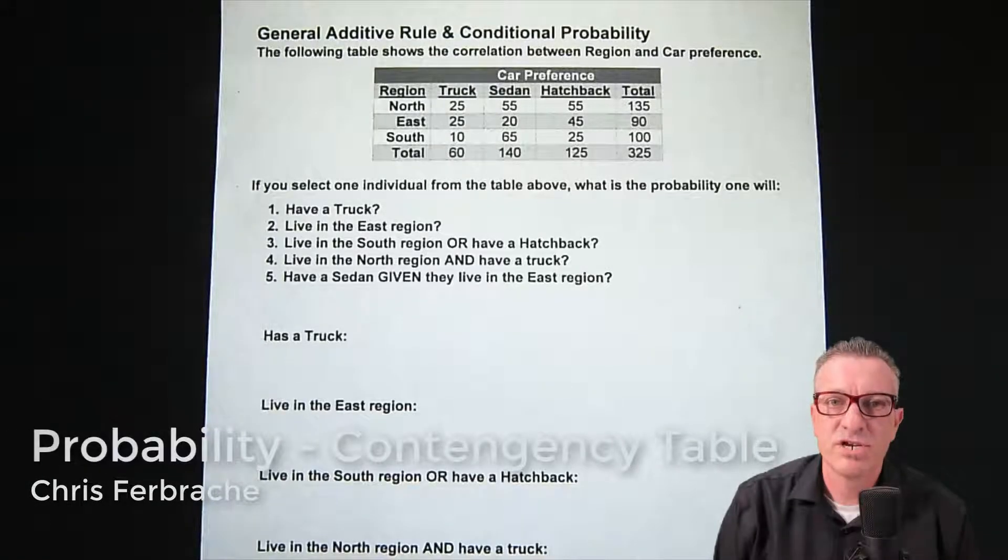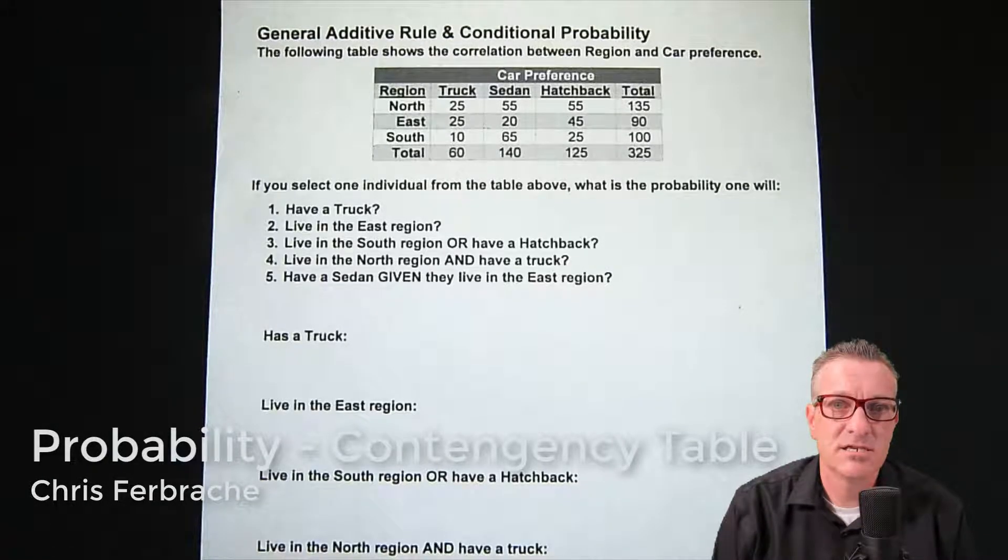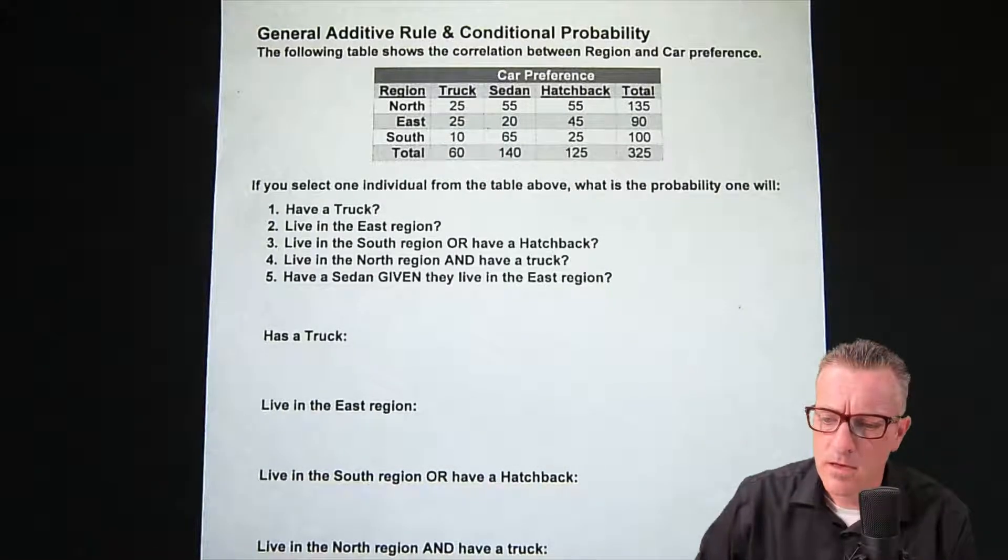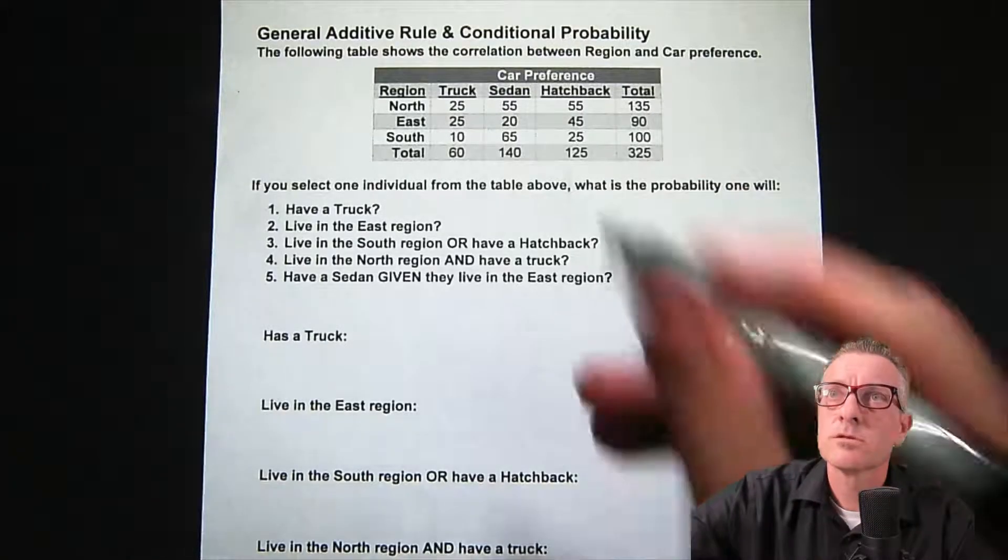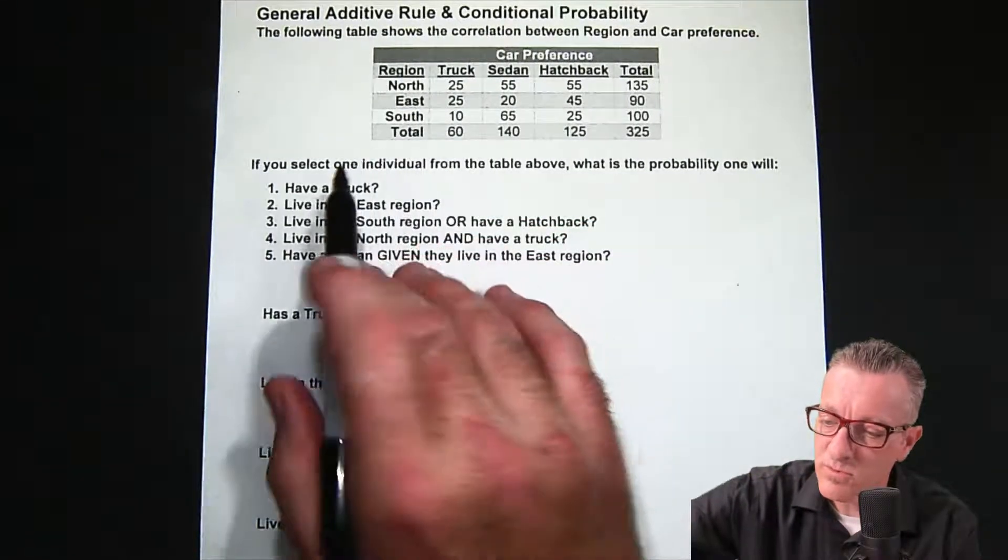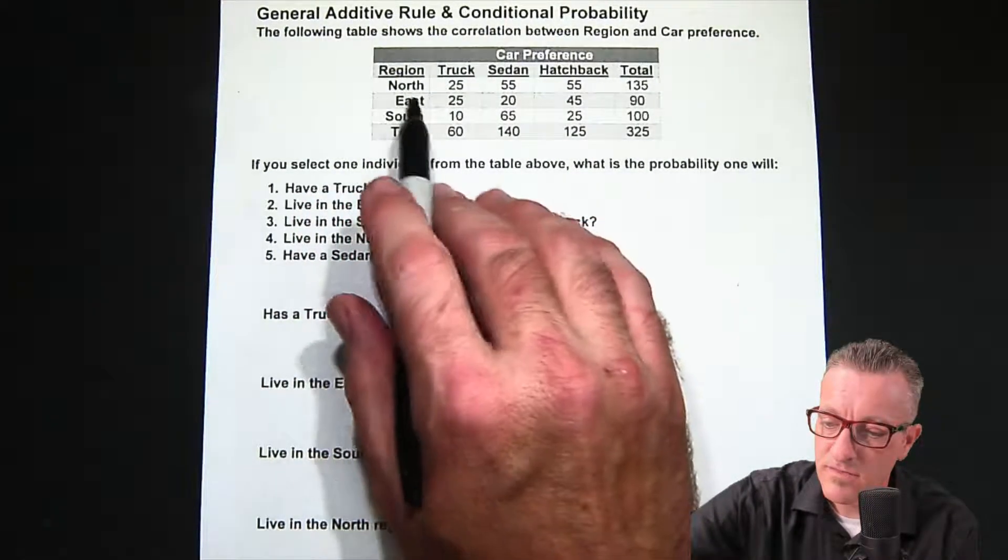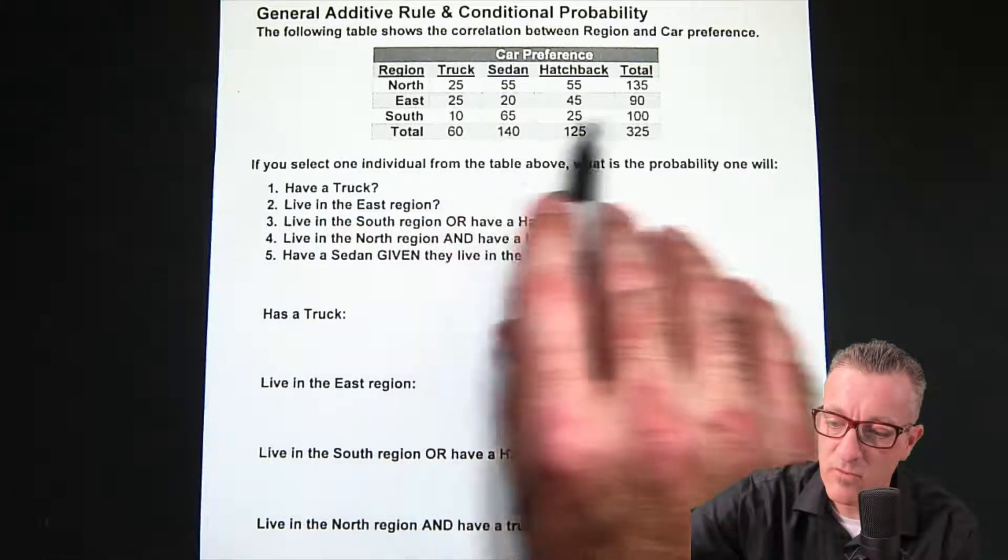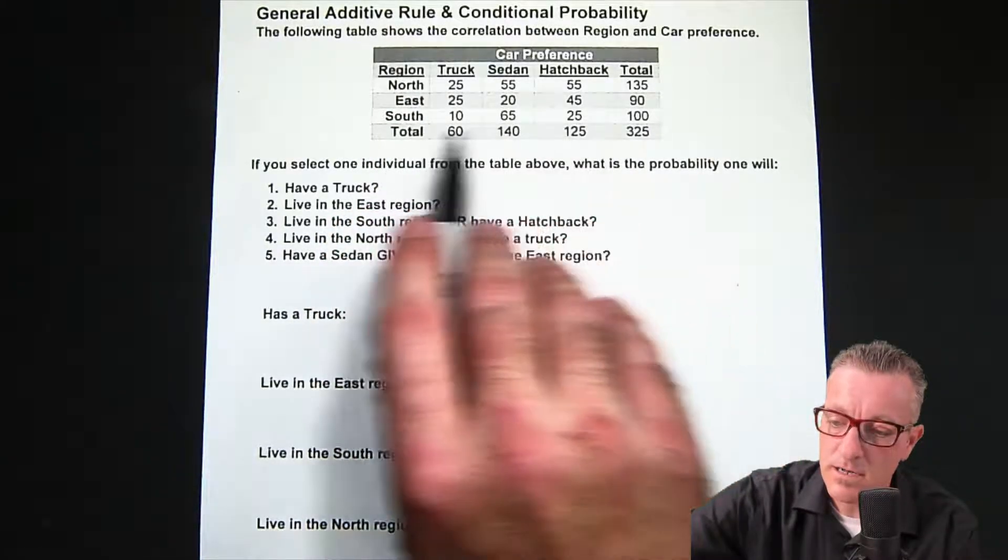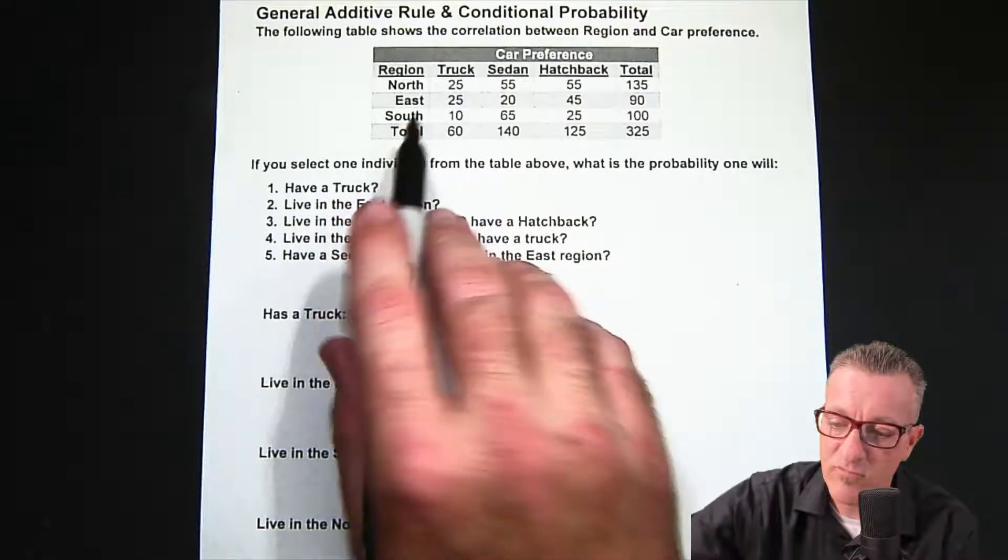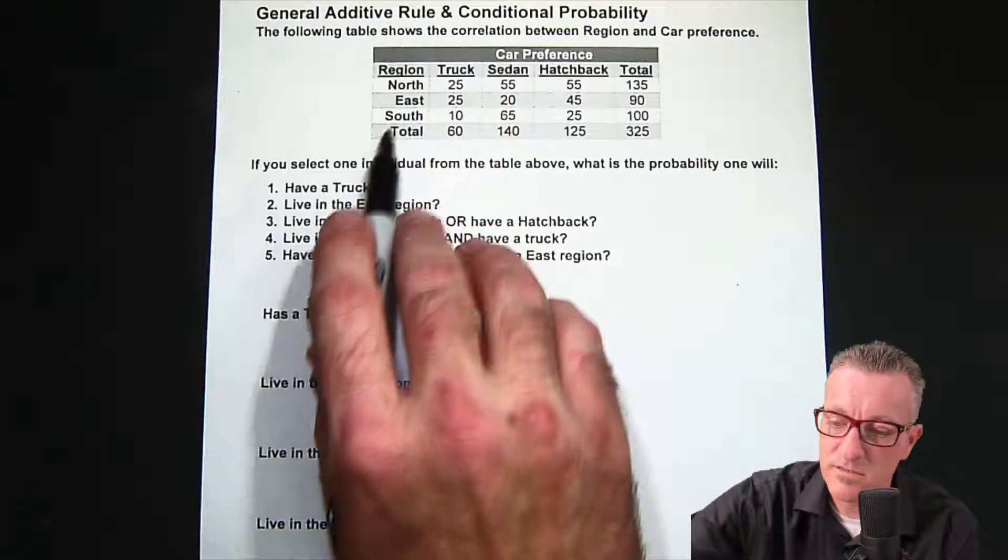Hi, this is Christopher Boucher and I'm going to review a contingency table probability example. We have this table here, and on the left, essentially representing the rows, are our region areas - North, East, South. I don't have West but I just wanted to keep it to three.